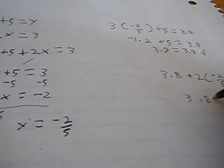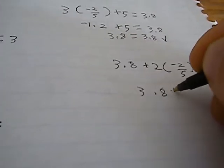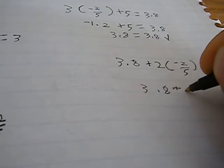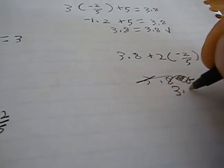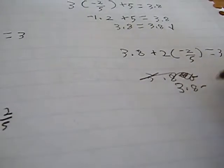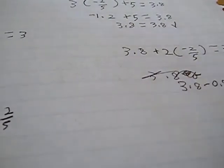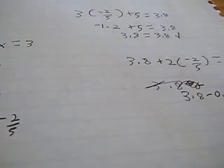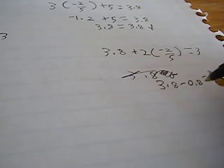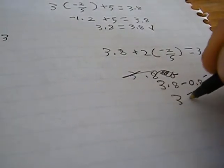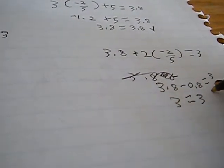3.8 minus 0.8 is equal to 3. And that is true. And this together is 3. And 3 is equal to 3. So, this also checks.